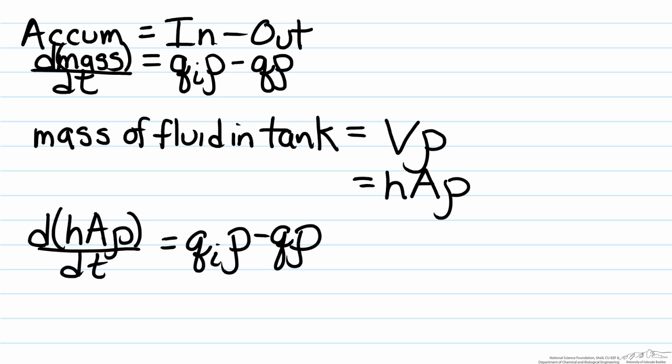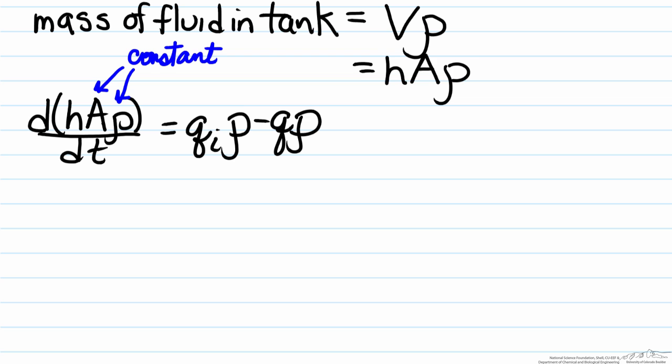We can simplify this a bit more by looking at what's inside of our derivative. If we look at our derivative we have h, which will vary as a function of time, because the height of the tank can change depending on what the flow rates in and out are. However A, which is the cross sectional area of the cylindrical tank, and rho, the density of the fluid, are two things that are not going to change the function of time, therefore these are both constants. And what that allows us to do is it allows us to remove them from the derivative.